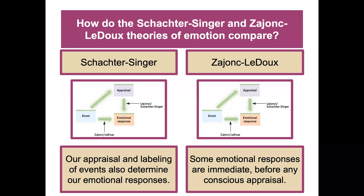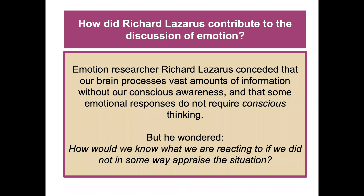Comparing these theories: in the Schachter-Singer model, our appraisal and labeling of events determines our emotional responses. But in the Zajonc-LeDoux view, some emotional responses are immediate — before any conscious appraisal. Emotion researcher Richard Lazarus conceded that the brain processes vast amounts of information without conscious awareness and that some emotional responses don't seem to require conscious thinking, but he wondered: how do we know what we're reacting to without some appraisal of the situation?